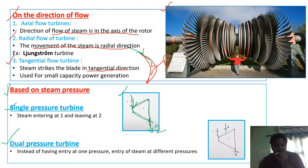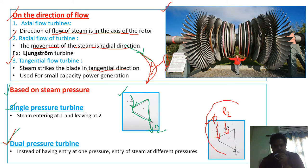In the case of a dual pressure turbine, instead of having entry at one pressure, steam enters at different pressures. Steam enters the turbine at pressure P1 at point 0.1 and also enters the turbine at a second pressure P2. This type of turbine is called a dual pressure turbine because the entry pressures are different.